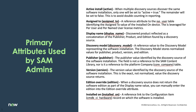The first one is Active. When we have multiple discovery sources for the same software installation, only one will be marked as active. The remainder of those will be marked as false. So that's one of the things we'll definitely want to make sure of.